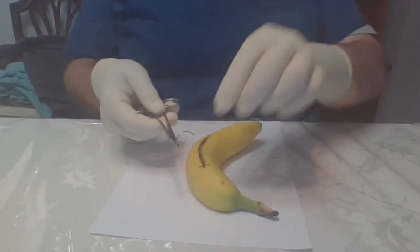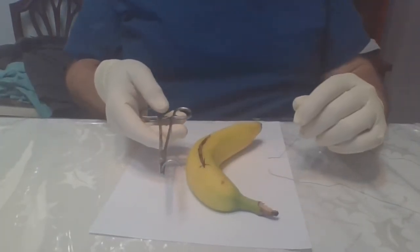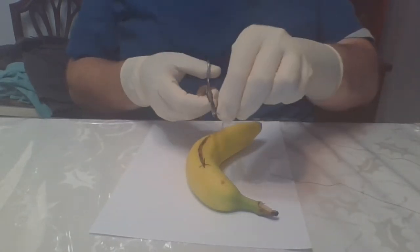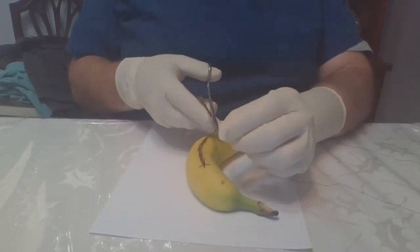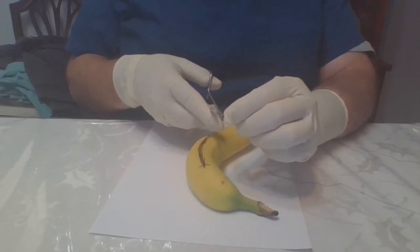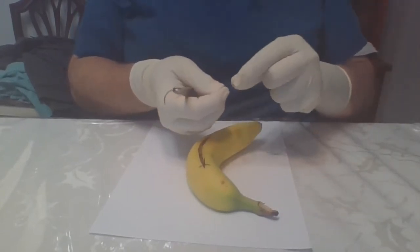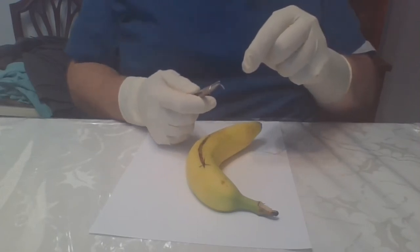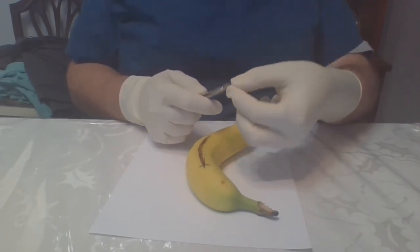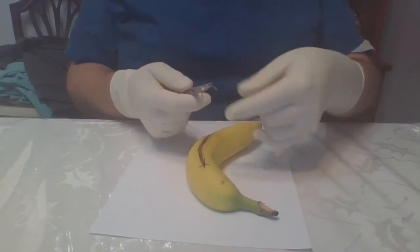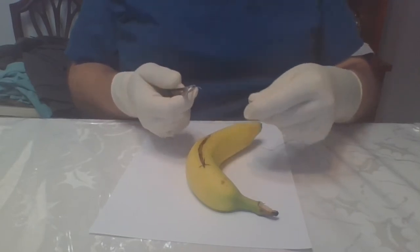And as you see, when the doctor hands this back to you, it's usually going to be like that. So we need to reset the needle. Take the silk through the eye. Three to four inches excess.